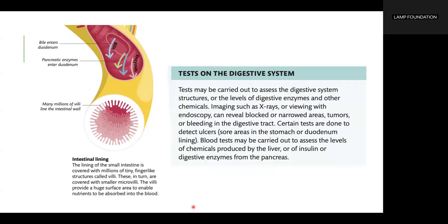Tests may be carried out to assess the digestive system structures or the levels of digestive enzymes and other chemicals. Imaging such as X-rays, or viewing with endoscopy, can reveal blocked or narrowed areas, tumors, or bleeding in the digestive tract. Certain tests detect ulcers — sore areas in the stomach or duodenum lining. Blood tests may assess levels of chemicals produced by the liver, or insulin and digestive enzymes from the pancreas.